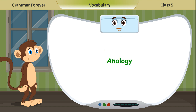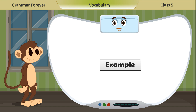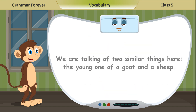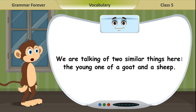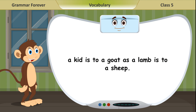Analogy. An analogy is the similarity between two things that are compared. Example: a kid is a young goat and a lamb is a young sheep. We are talking of two similar things here — the young one of a goat and a sheep. We can write this as: a kid is to a goat as a lamb is to a sheep.